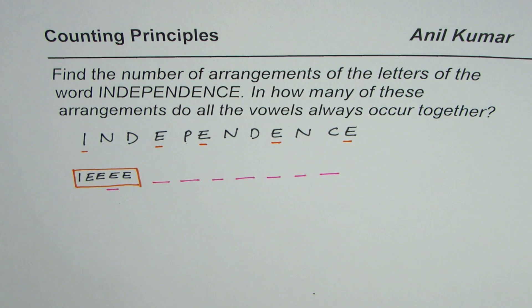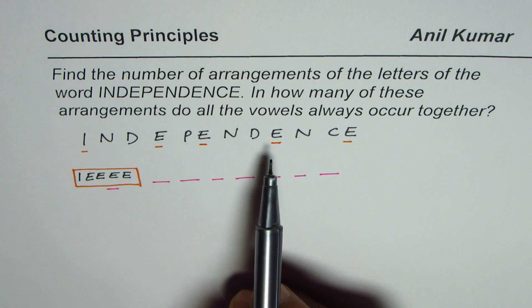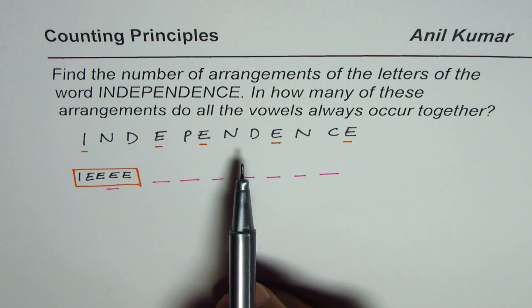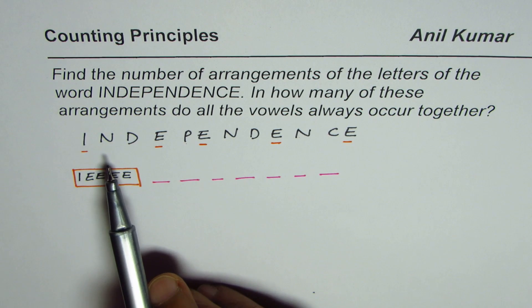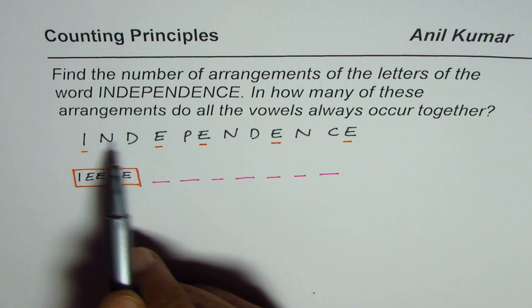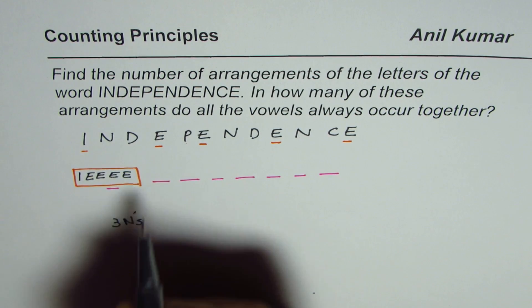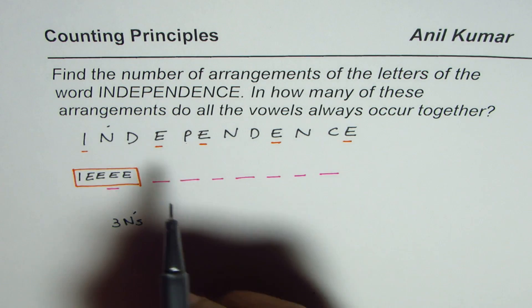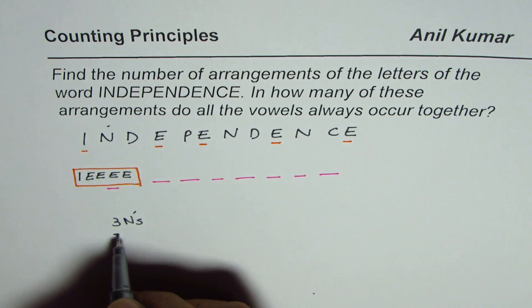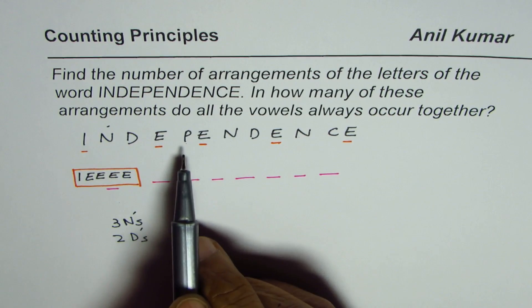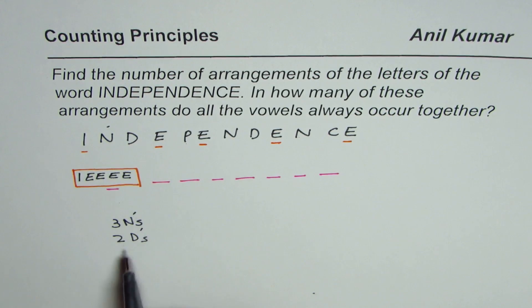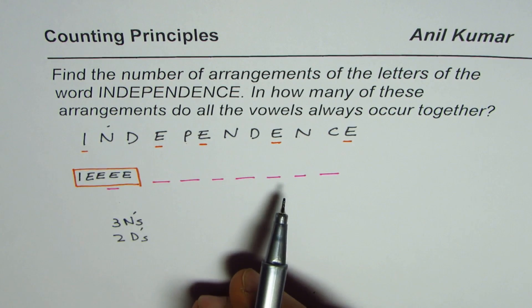Now, you'll notice that in this word, there are some letters which are repeated. So they are going to restrict or reduce the number of selections. How many N's are there? We have three N's. Two D's. So we have two D's. So no other word is repeating. Three N's and two D's. So that is the number of repetitions in the particular group.